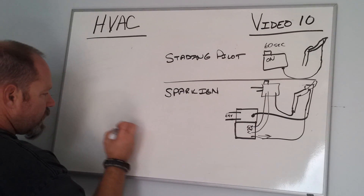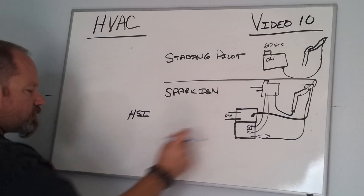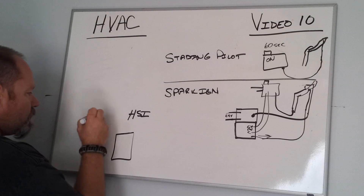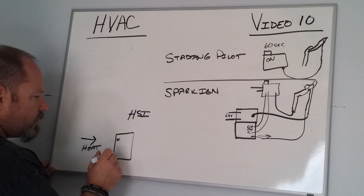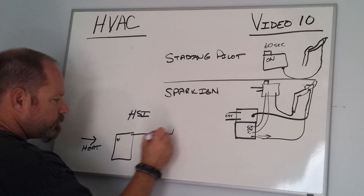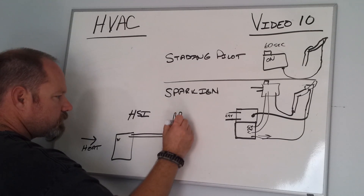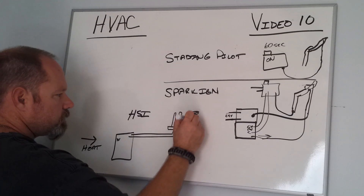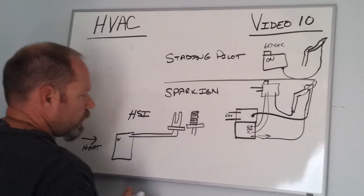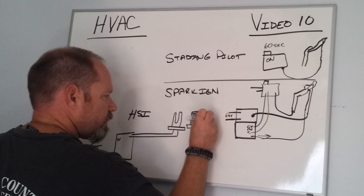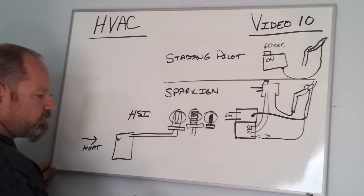The newest style is HSI — hot surface ignition. Hot surface ignition also uses a control module. When you get a call for heat on W, the hot surface ignition sends power to one of several different style electrodes. There are a few different designs, but the most common ones include a coil-style and a flat card style that looks like a bar. This area glows red hot and is located in front of the manifold somewhere.